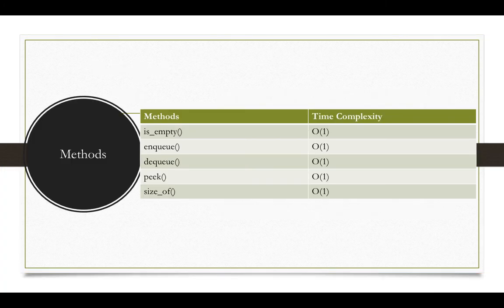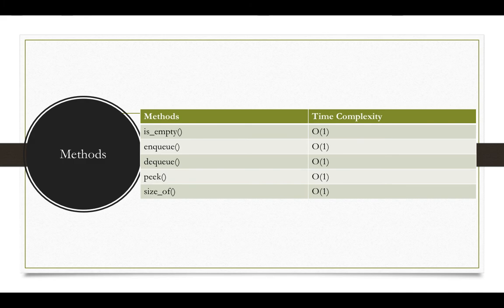So what exactly can a queue do? Here are the methods we're going to be implementing today in Python. The empty method will return a Boolean value — true or false — depending on if there's something in the queue or not. Enqueue is the way we add items to our queue. Dequeue is the way we remove items. Peek will show the item at the very front of the queue but won't remove it. And size-of will return the size of the queue. Just like in a stack covered in the last video, the time complexity of all these operations is O(1), especially since we're implementing this using nodes rather than a list, which is how we achieve that O(1) time complexity.